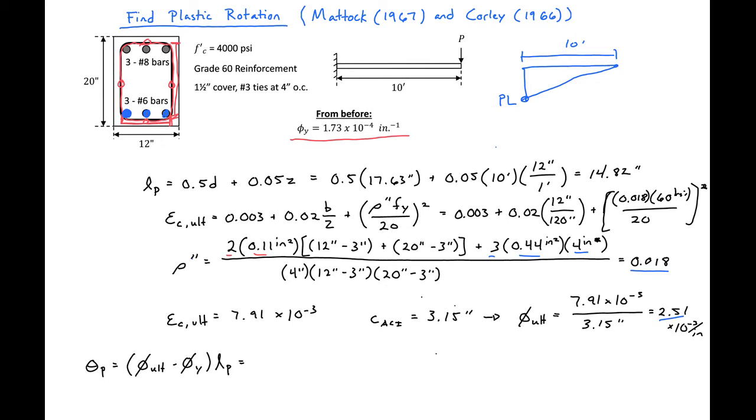In our case we have an ultimate curvature of 2.51 times 10 to the negative third. We have a yield curvature from before of 1.73 times 10 to the negative fourth. And our plastic hinge length we found to be 14.82.